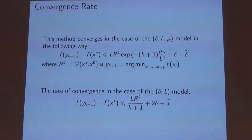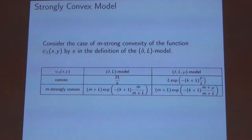Let's consider the case when the function psi is strongly convex. This can happen for example in composite optimization problems. We see that m-strong convexity of the function psi improves the convergence rate, as in the table.